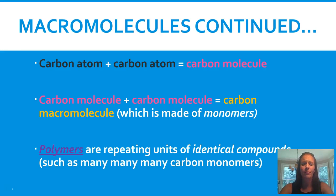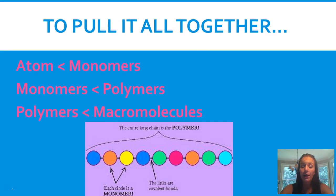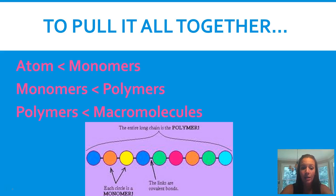Let's break it down a little more. If you combine carbon with carbon, you get a carbon molecule. If you combine two carbon molecules, you get a carbon macromolecule, which are monomers. Polymers are just repeating units of identical compounds, such as many carbon monomers. An atom is smaller than a monomer, a monomer is smaller than a polymer, and a polymer is smaller than a macromolecule — macromolecules are the biggest. All the little dots you see in the picture are monomers, and all together they form a polymer.